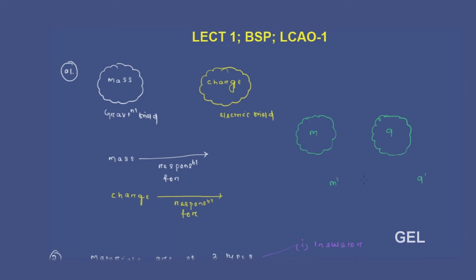If any other mass M' or any other charge Q' comes under the influence of this gravitational field or this electric field, this mass will attract M' with a force called gravitational force of attraction. Similarly, if any other charge Q' comes under the influence of this electric field, this charge will attract Q' with a force called electrostatic or electric force.